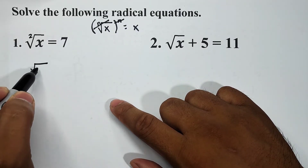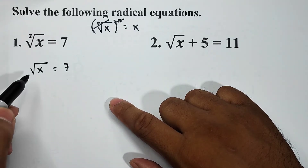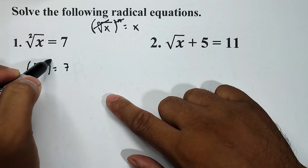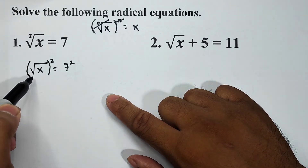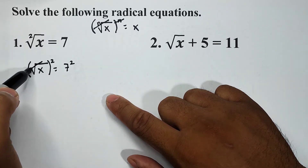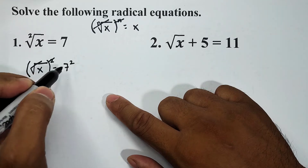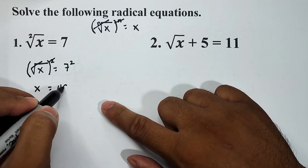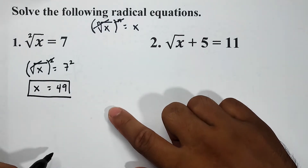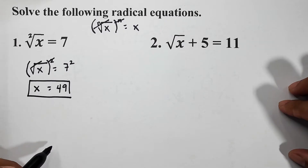We have the square root of x is equal to seven, so basically we have an index of two. To solve this problem and find the value of x, we need to square both sides of the equation. Square root of x squared and seven squared — we can cancel this out, and we have x is equal to seven squared, which is equal to 49. So this is now the value of x — as easy as that.